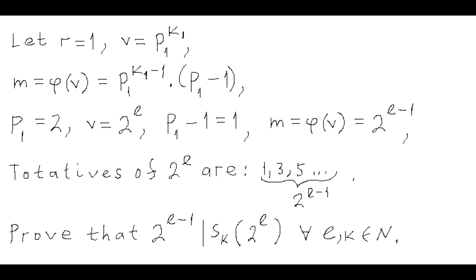That contradicts the definition of numbers v. So if r equals 1, then v can only be in the form 2 to some l, then p1 minus 1 equals 1, and m equals phi of v equals 2 to the l minus 1. The totatives of 2^l are the first consecutive odd numbers 1, 3, 5, etc., whose count is 2^(l-1). We need to prove that sk of 2^l is divisible by 2^(l-1) — equivalently, that the sum of k-th powers of those odd numbers is divisible by their count.